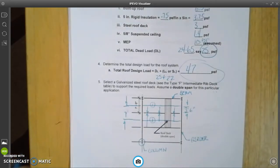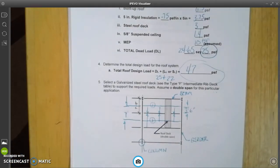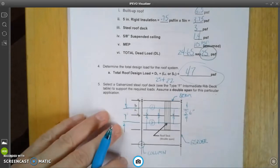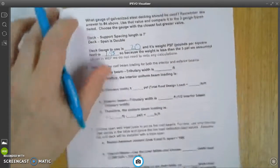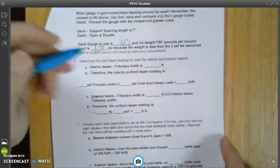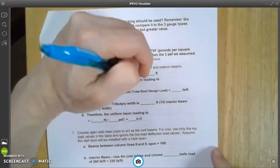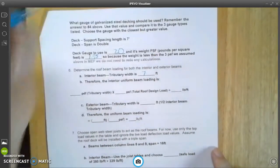So that is going to be our interior beam tributary, or tributary area, however that is correctly pronounced. We're going to take this and make that 7.